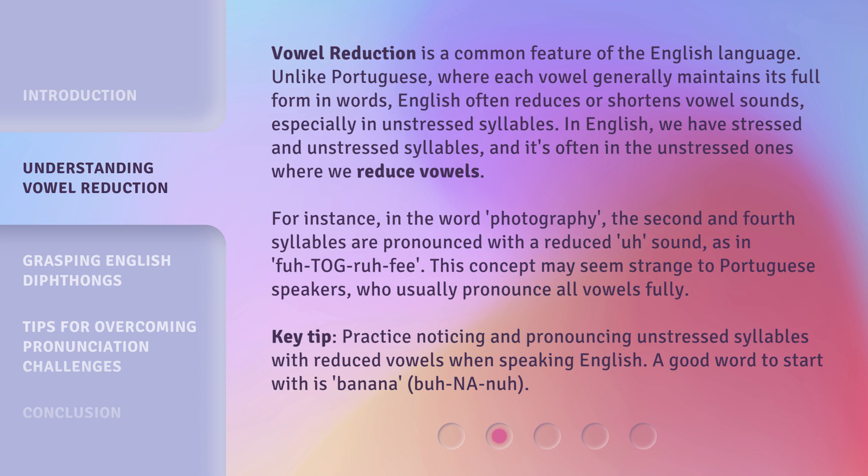in the word 'photography,' the second and fourth syllables are pronounced with a reduced 'uh' sound, as in 'pho-to-g-ra-fi.' This concept may seem strange to Portuguese speakers, who usually pronounce all vowels fully. Key tip: practice noticing and pronouncing unstressed syllables with reduced vowels when speaking English. A good word to start with is 'banana' — 'ba-na-na.'